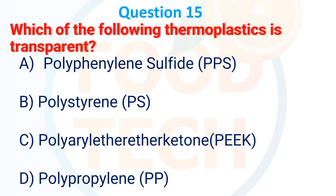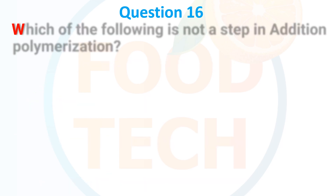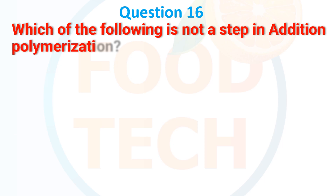A) Polyphenyl sulfide, B) Polystyrene, C) Polyacrylethyl ketone, D) Polypropylene. The answer is B) Polystyrene. Which of the following is not a step in addition polymerization?